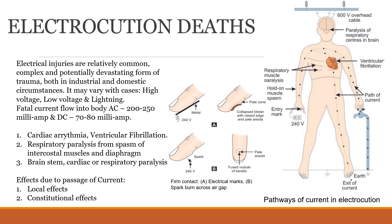The pathways of current in electrocution: if a person is holding a wire, the current enters from one hand, travels through the circulatory system, passes through the heart, and exits through the legs. The most fatal condition is when the person holds the electricity with their right hand. The current exits through the earth; exit injuries can be seen on the soles of the feet or on the hands if touching another metal surface. Both entry and exit injuries can be observed.